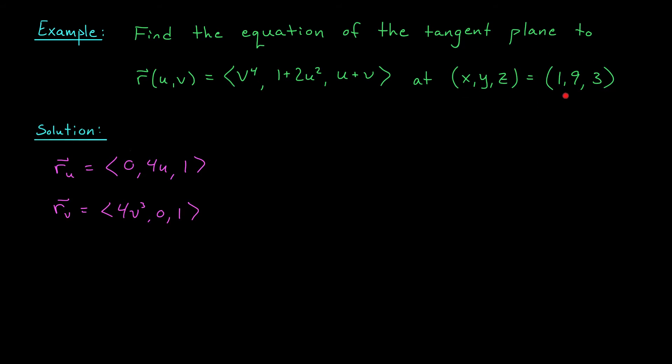Here, we're only given the values of x, y, and z. We're going to have to use this information to figure out the values of u and v at this point. So let's look at the first component. x is equal to v to the four, and that's supposed to have a value of one. So it tells me that v is either plus or minus one. Likewise, we know that y is equal to one plus two u squared, and that has a value of nine. If you rearrange this equation, you'll find that u is either plus or minus two.